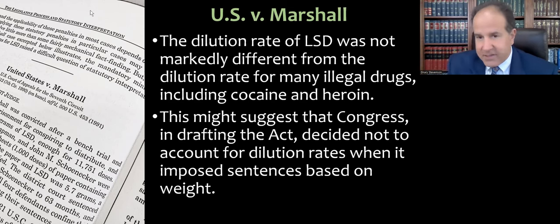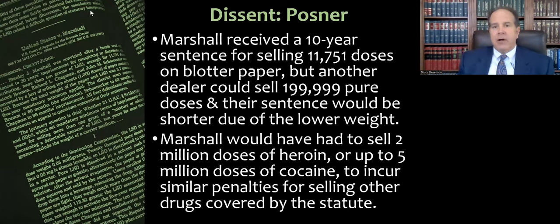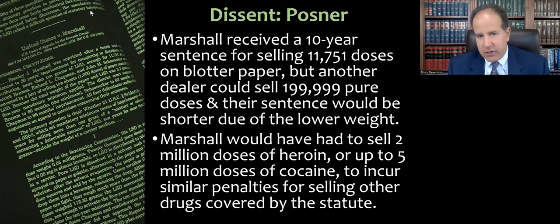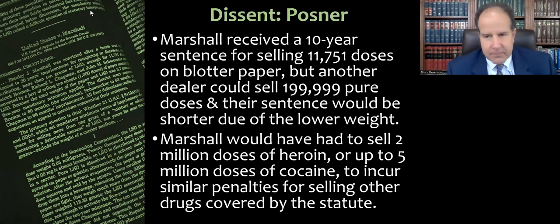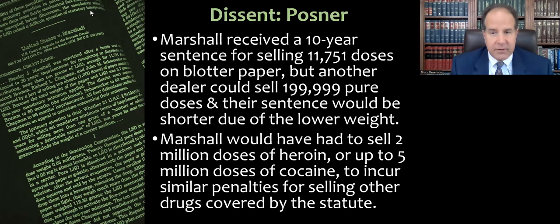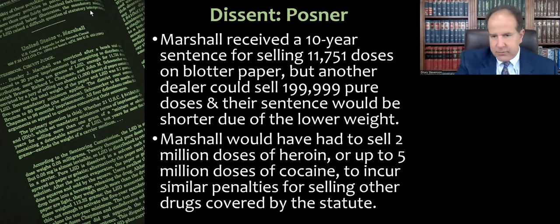Going back to Posner's dissent for a moment: Marshall had sold about 11,000 to 12,000 doses on blotter paper — remember, 100 doses per sheet. Posner compares this to a hypothetical dealer who, if he could get his hands on the pure substance, could sell 200,000 doses by molecular weight and yet receive a shorter sentence. Posner also compares Marshall's sentence to what he would have received for selling equivalent amounts of heroin or cocaine, and says the results are completely out of proportion.